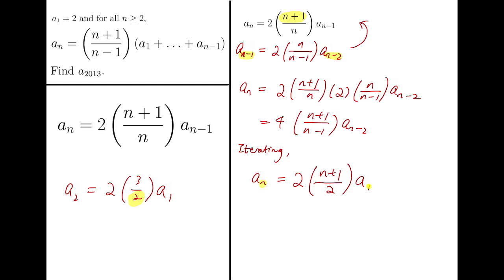Now for n going down to 1, we go down by n minus 1 steps. So this power should be 2 to the (n-1). And replacing a_1 by 2, by definition, we'll have a_n equals 2^{n-1} times (n+1).